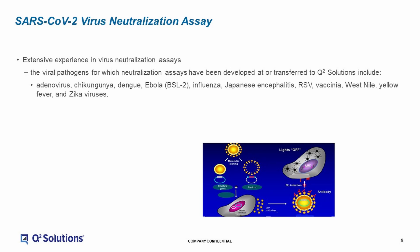Now turning to serum neutralization assays. Quantitation of neutralizing antibodies is paramount in the evaluation of an effective vaccine. Based upon the long history of Q-Squared Solutions in this testing area, we are in a unique position to help you in your vaccine development. Over the decades, we have been involved in the licensure of a variety of different vaccines using neutralizing antibody assays deployed in our laboratory.